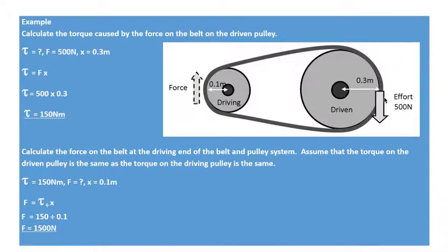It's producing a force of 500 newtons on the driven pulley. Now what we're asked to find there is the torque caused by the force on the belt of the pulley.